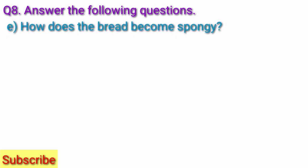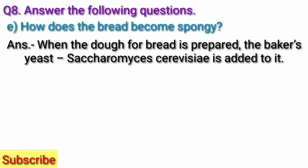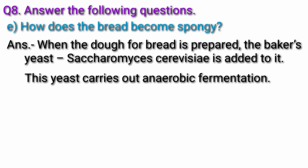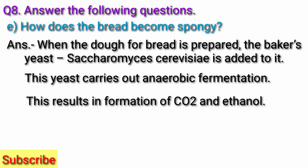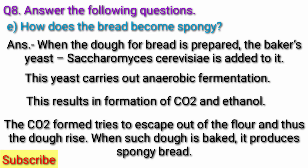Question E. How does bread become spongy? Answer: When dough for bread is prepared, baker's yeast Saccharomyces cerevisiae is added to it. This yeast carries out anaerobic fermentation. This results in formation of CO2 and ethanol. The CO2 tries to escape out of the flour and thus the dough rises. When such dough is baked, it produces spongy bread.